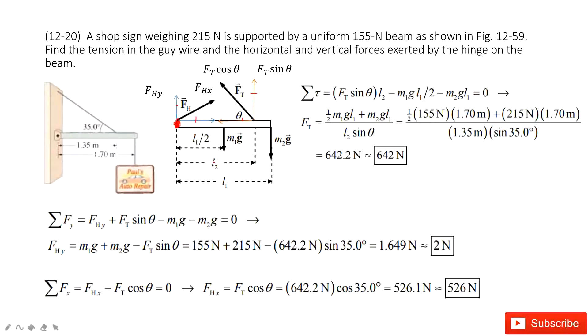And then, in the opposite direction, we have two forces, M1g and M2g. So M1g pointing down times the distance L1 divided by 2, and then M2g times L1, which is the total length. Now we solve this equation to get Ft. Input the known quantities, and get the answer for Ft.